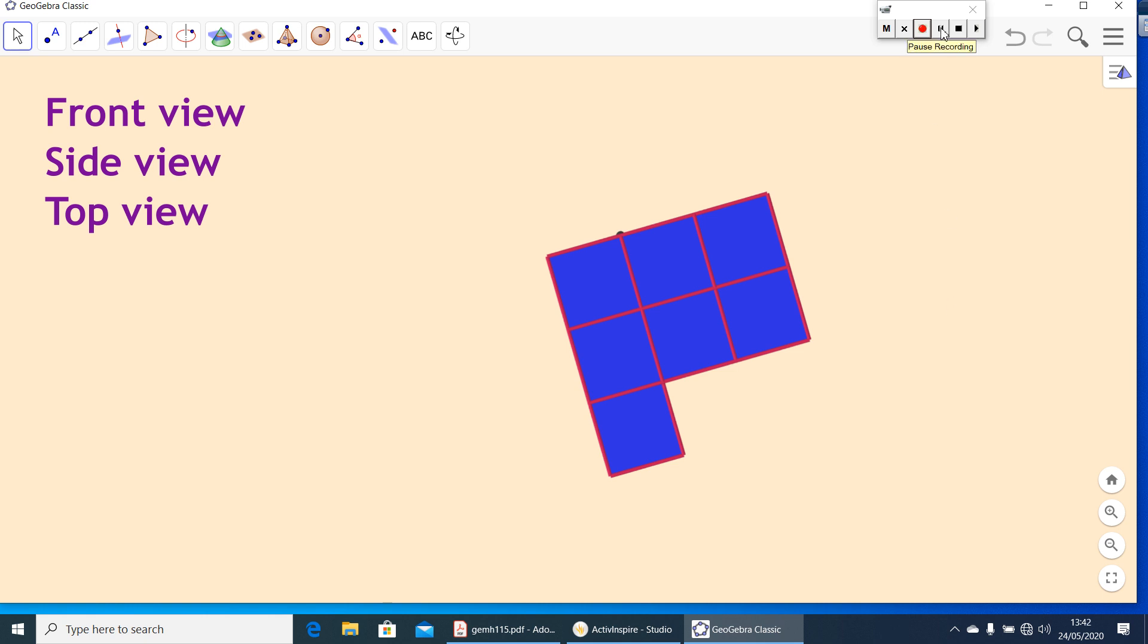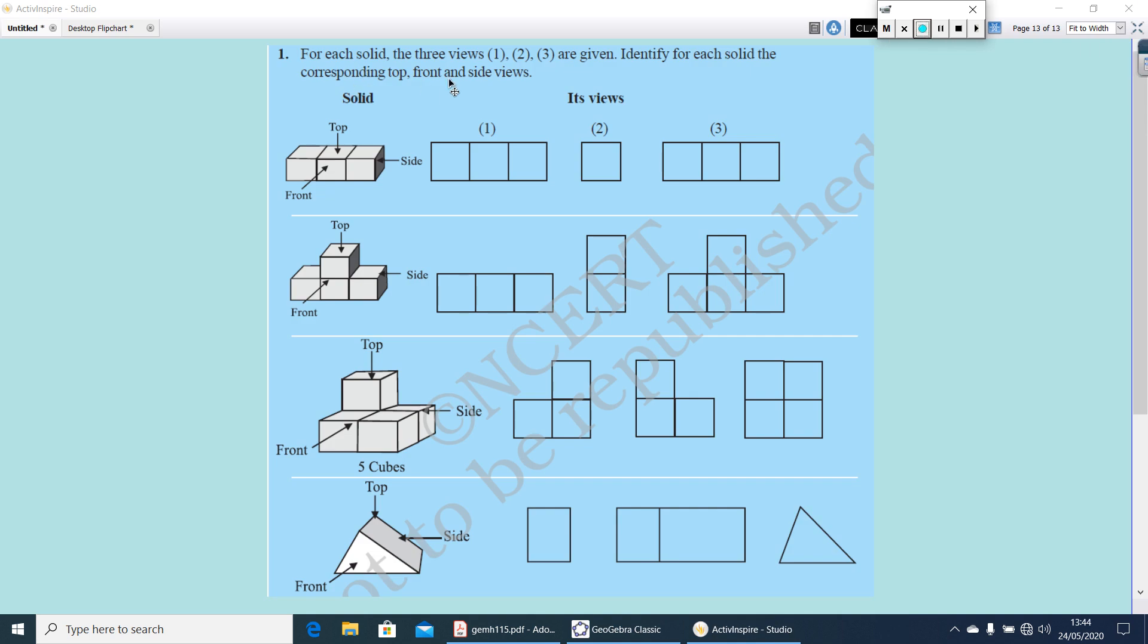Now, let's have some questions. Here, for each solid, the 3 views 1, 2, and 3 are given. Identify for each solid the corresponding top, front, and side views. That means, this is the figure. You have to say which view it is. This one, of course, it will be the front view. Second one, it will be the side view. And third one, again, it is just like front view, it is the top view. So, here, you have to write front, side, and top. Here, same way, you check which view this will be. This will be the top view. Find out other two.